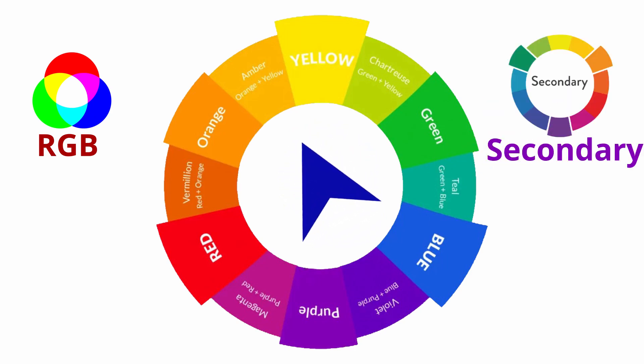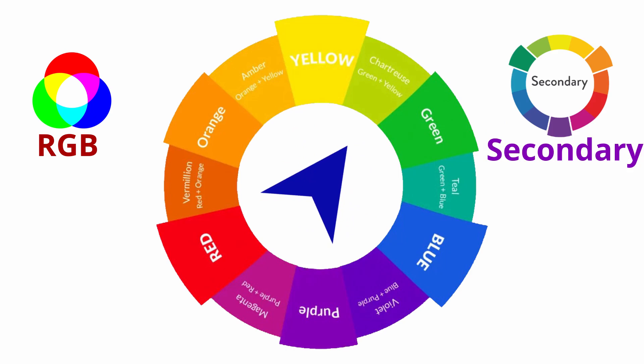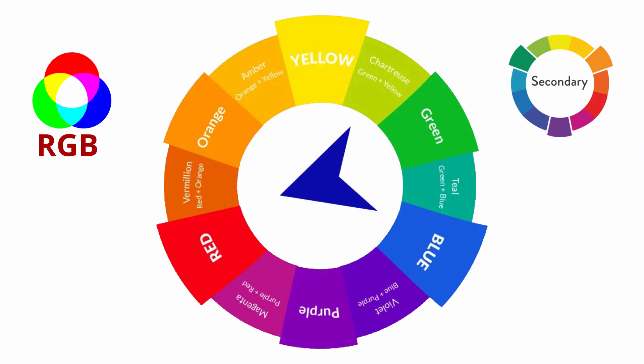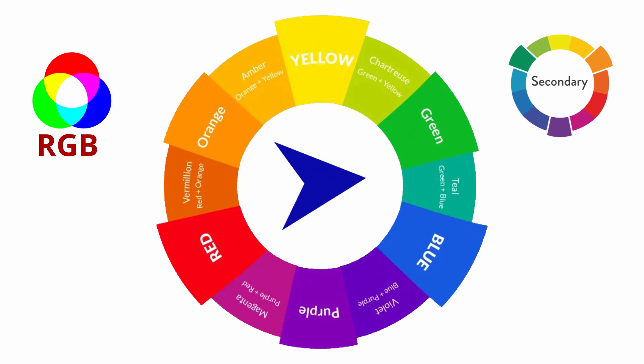The secondary colors in the YRB system are created by mixing two primaries: orange equals yellow plus red, violet equals red plus blue, and green equals blue plus yellow.